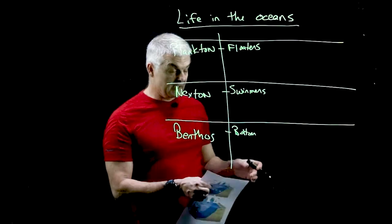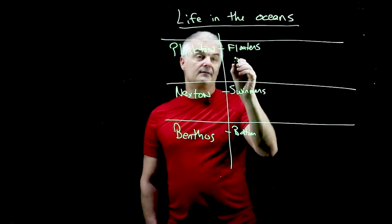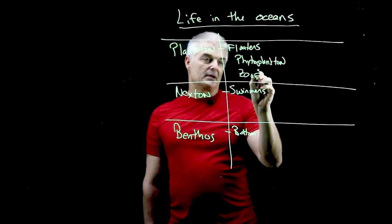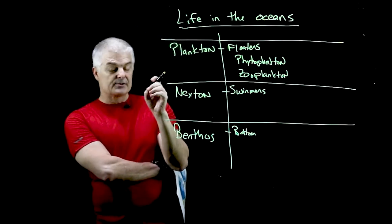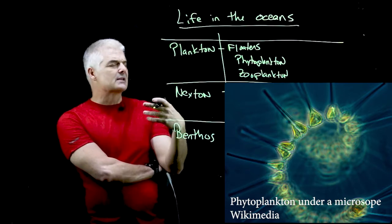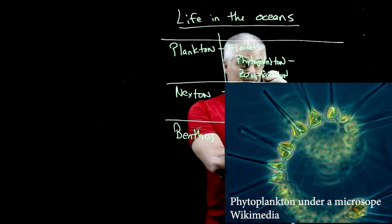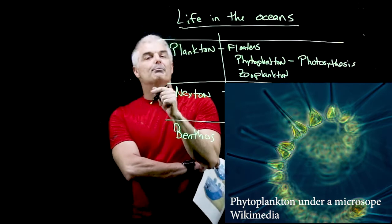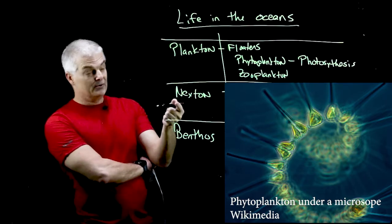Among the floaters, there are really two categories: phytoplankton and zooplankton. These are small, sometimes single-celled creatures — think back to biology class, amoebas and things like that. Phytoplankton get their energy from the process of photosynthesis; these are essentially the plants of the ocean.